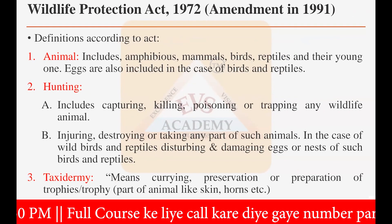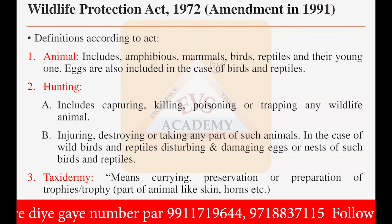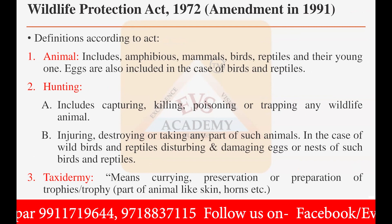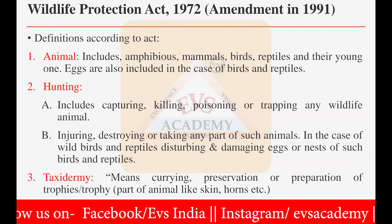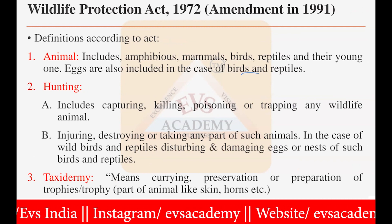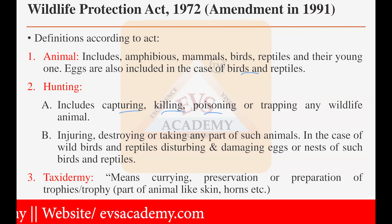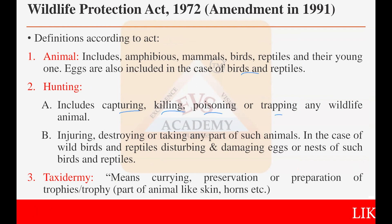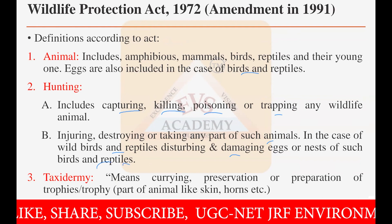Under the Wildlife Protection Act, key definitions are provided. 'Animal' includes amphibians, mammals, birds, reptiles, and their young ones; eggs of birds and reptiles are also included. 'Hunting' includes capturing, killing, poisoning, or trapping any wildlife animal. Injuring, destroying, or taking any part of such an animal counts as hunting; and in the case of wild birds and reptiles, disturbing or damaging eggs or nests is also considered hunting.